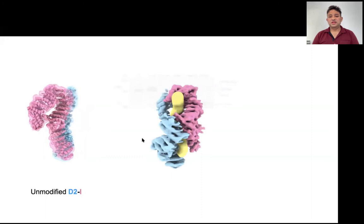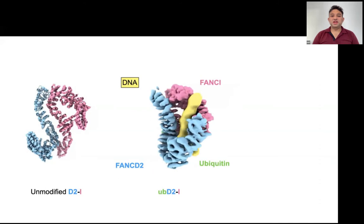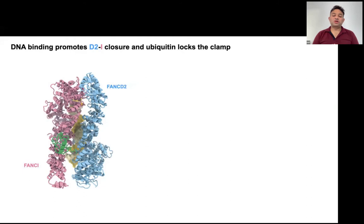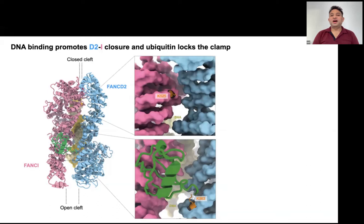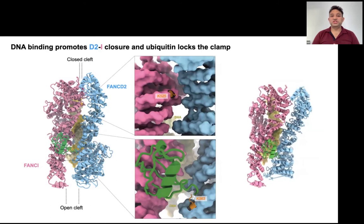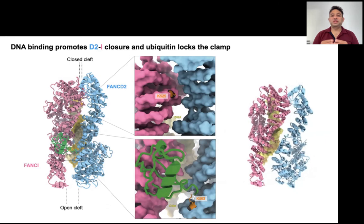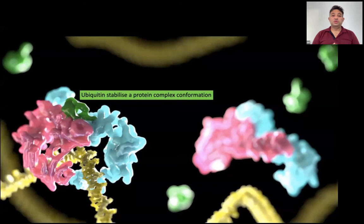Surprisingly, the ubiquitinated D2-I CryoEM map showed that D2-I now encloses DNA. When we built a model into this CryoEM map, it threw a lot of surprises. First, the ubiquitin site of FANCD2 is open and is occupied by ubiquitin, where ubiquitin makes extensive contacts with FANCI. Secondly, FANCI, despite being structurally similar to FANCD2, has its monoubiquitination site still occluded. Finally, as the more exciting observation, the structure showed ubiquitin acting as a molecular pin, which ensures that the D2-I clamps onto the DNA. To the best of our knowledge, this is the first description of ubiquitin acting to stabilize a protein complex conformation.